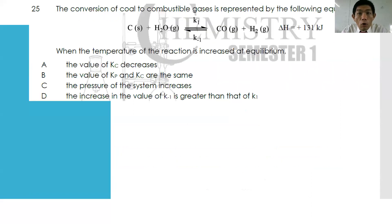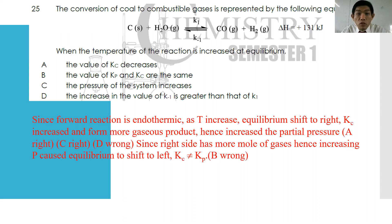Number twenty-five: the conversion of coal to combustible gases is C(s) + H₂O(g) → CO(g) + H₂(g), ΔH = +131 kJ. Forward reaction is endothermic. Option A: when temperature increases, Kc decreases — wrong, increasing temperature shifts equilibrium toward the endothermic direction (right), so Kc increases. Option B: values of Kc and Kp are the same — wrong, because the right side has two gas molecules, the left has one. Option C: pressure of the system will increase — yes, because more gas molecules are produced. Option D: increase in K₁ greater than K₋₁ — wrong. Best answer is C.